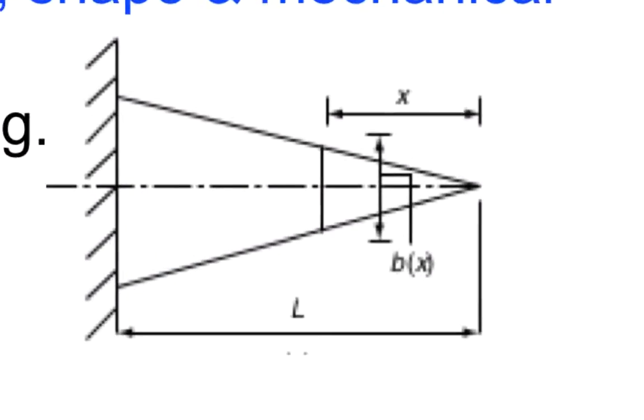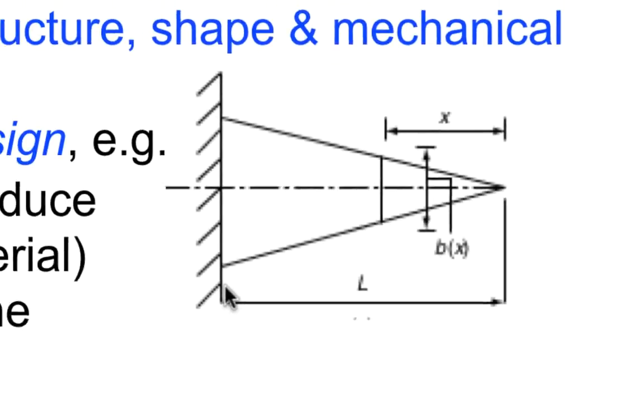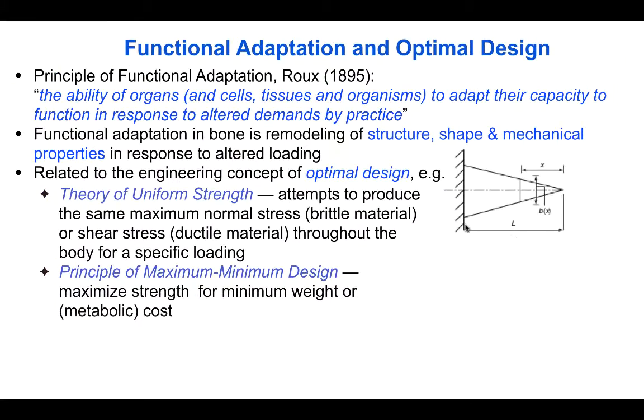Here, for example, we see a cantilever beam where the cross-section decreases towards the end, thereby keeping the maximum stress the same throughout the length of the beam.